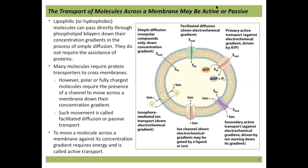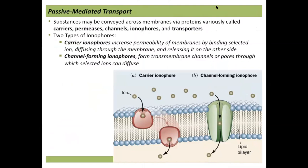This section focuses on passive transport — mediated passive transport using proteins. Various protein names include carriers, permeases, channels, ionophores, and transporters. Let's focus on ionophores first. Carrier ionophores increase membrane permeability by binding to the ion and helping it diffuse — they bind on one side, shield the charge, flip over to the other side, and release the ion. Or you can have channel-forming or pore-forming ionophores that allow ions to flow through.